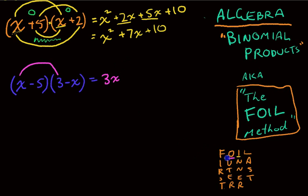The next one we do is the O for outer. Outside. The outside terms. So x times negative x. Be careful there's a negative in there. So x times negative x will be negative x squared.